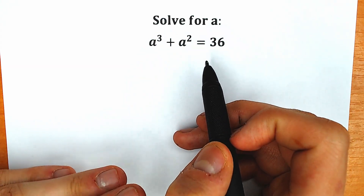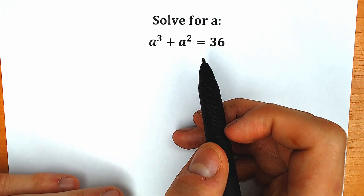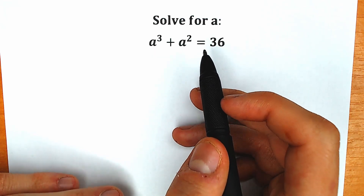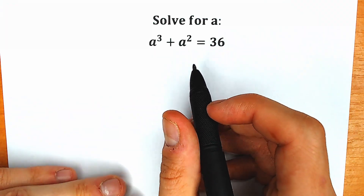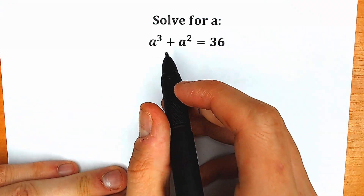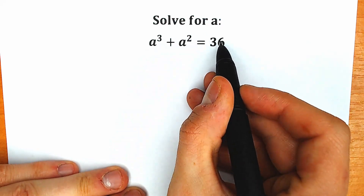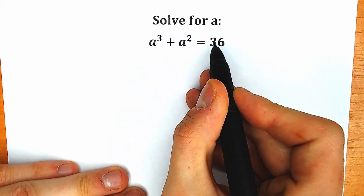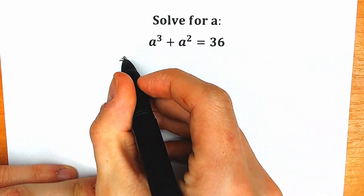If you have your solution, your answer, you can write your solution down into the comment section, and in a few minutes we will check our answer, so it will be really interesting. So how can we solve this question? First of all, let's write 36 on the left side. Let's do this right now.